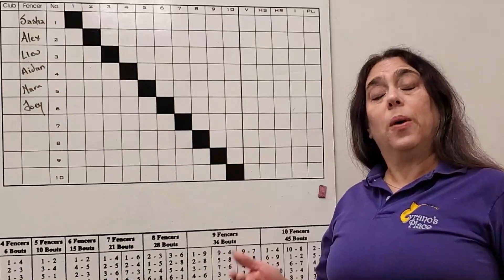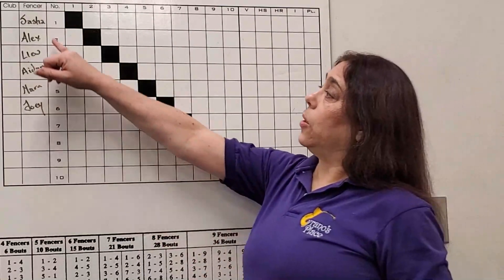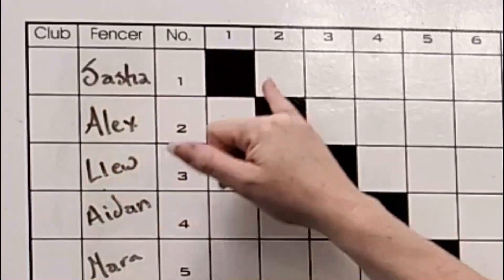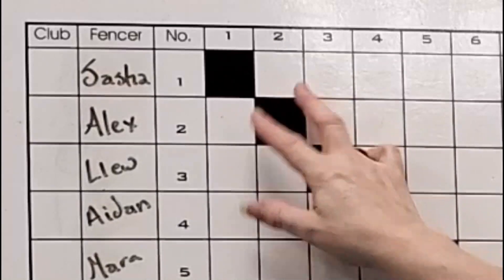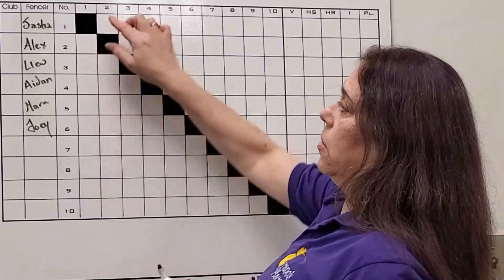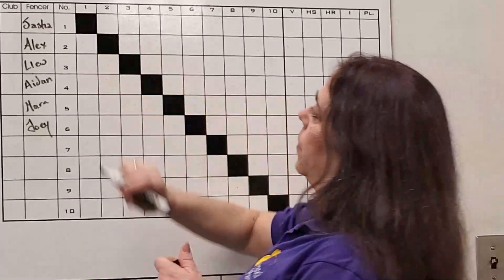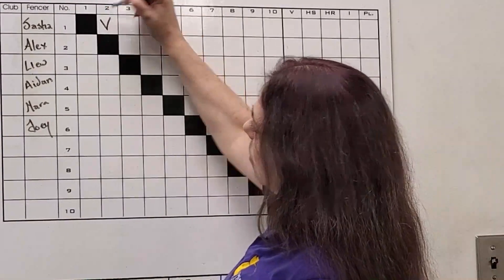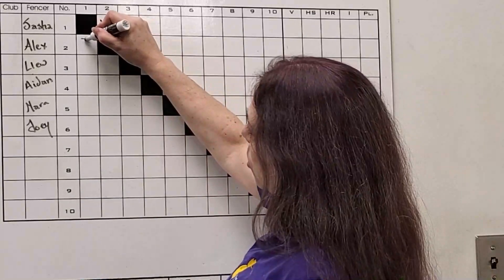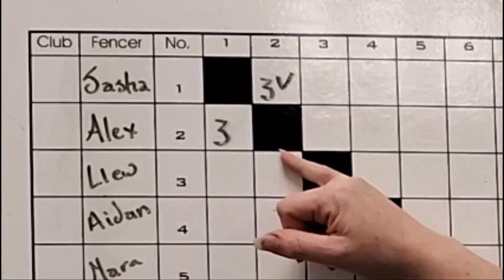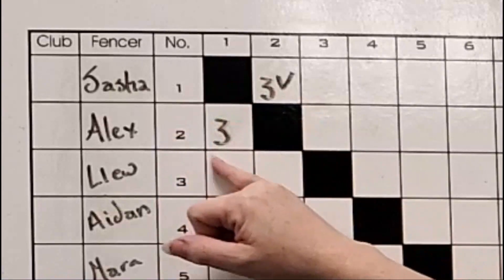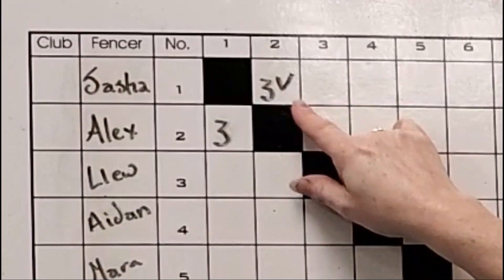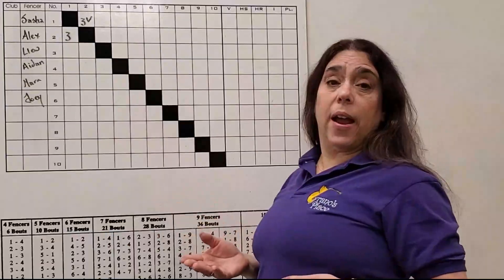The terms the referee is going to call are on strip, on deck, and in the hole. Be ready to fence when the referee calls you on strip. Once the bout is fenced, the referee needs to write in the score. When fencer number one fences number two, the score will go right here. If Sasha wins over Alex five to three, we can put a V, meaning victory, with five touches and a score of three.